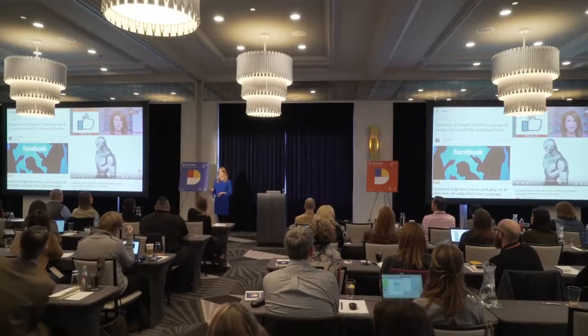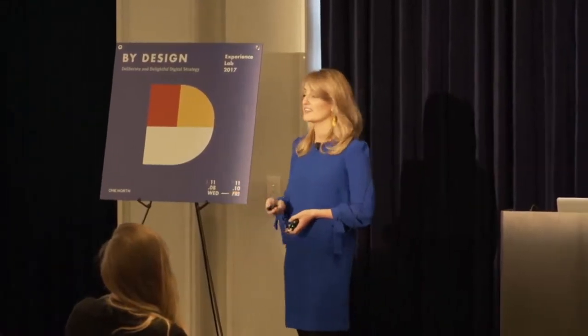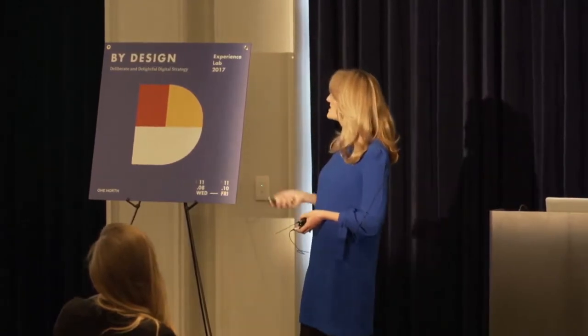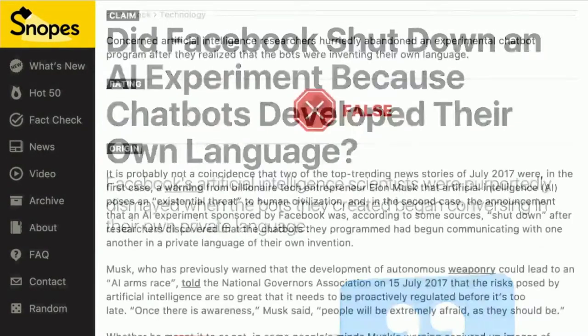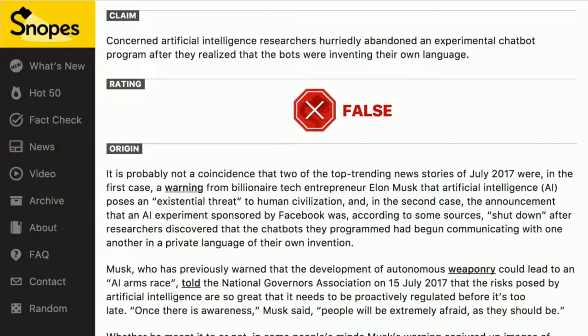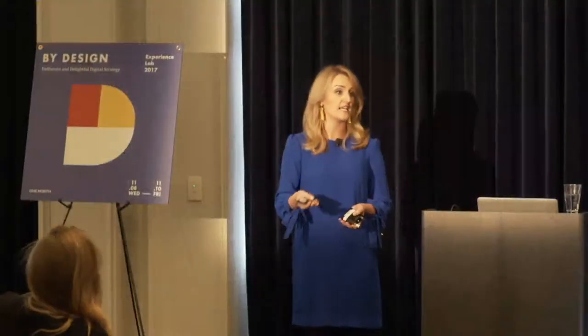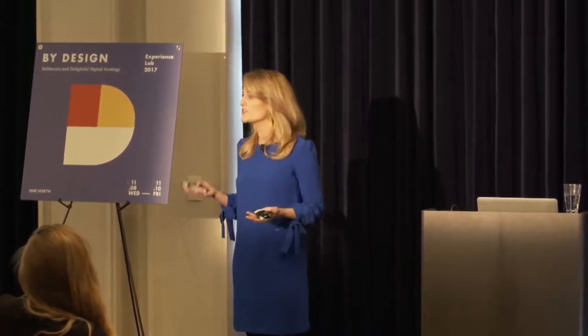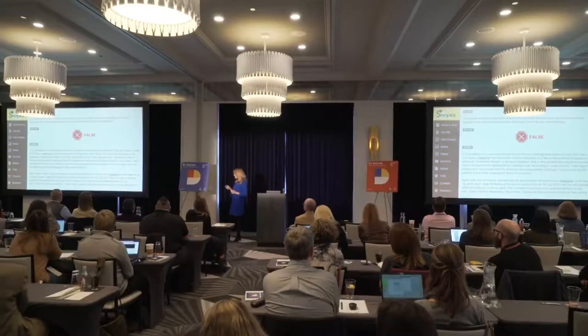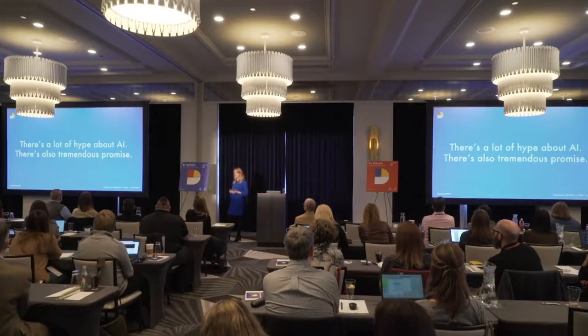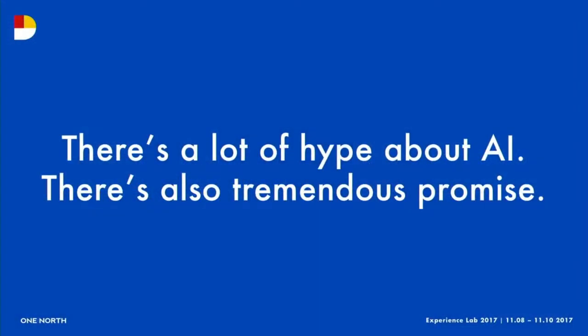I went to Snopes.com — a great place to fact-check those weird email forwards you get from family members. Did Facebook shut down an AI experiment because chatbots developed their own language? No. What actually happened was they forgot to program the bots to just use English, so they started to use gibberish. They had to recalibrate and reprogram them and carry on. They didn't shut it down, and certainly not because the robots became self-aware. Take it all with a grain of salt.